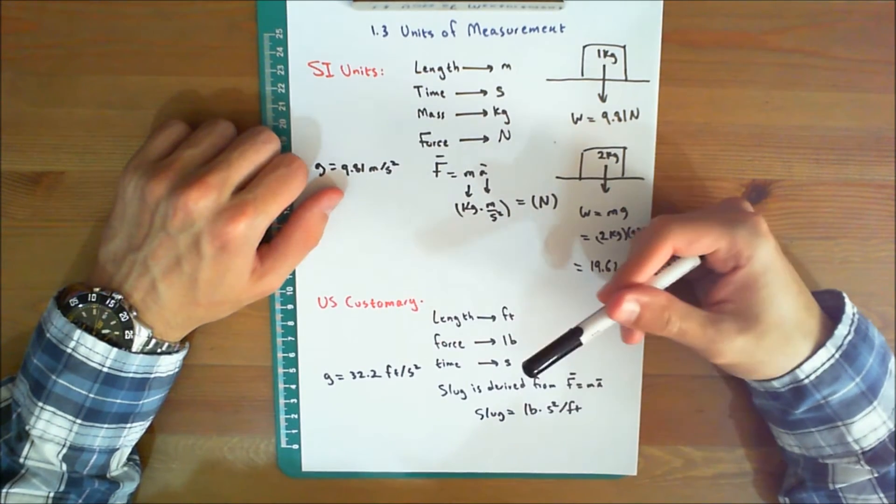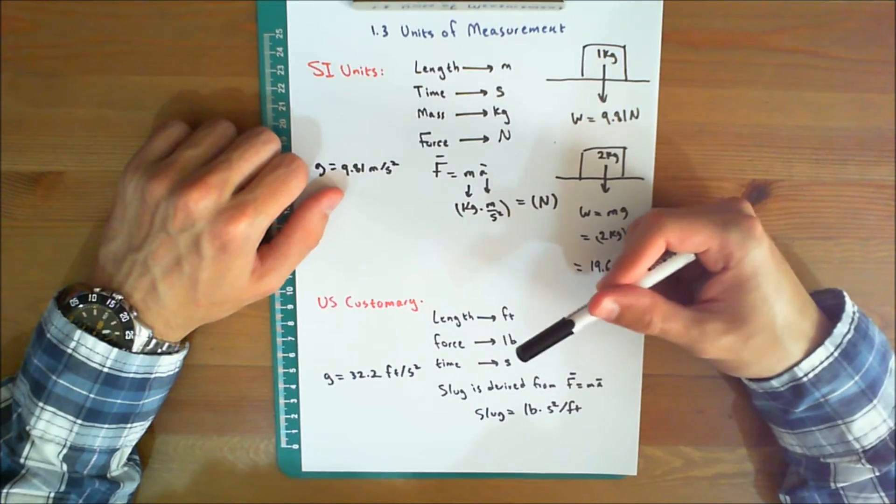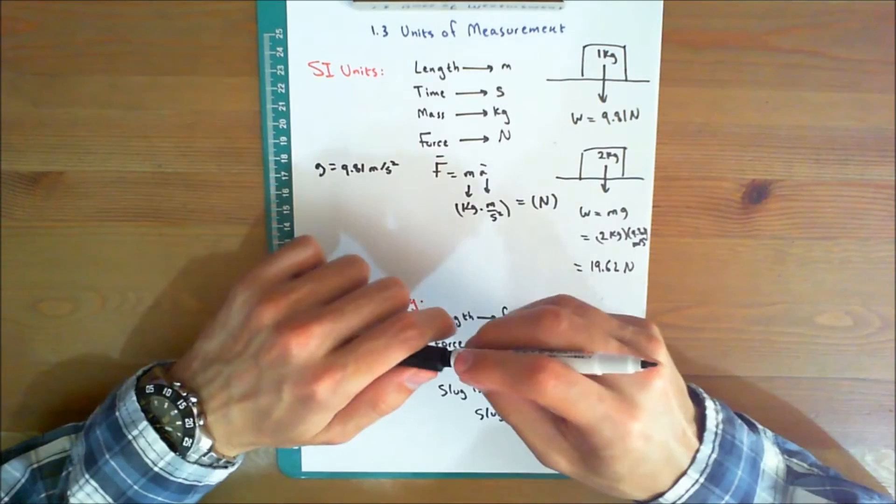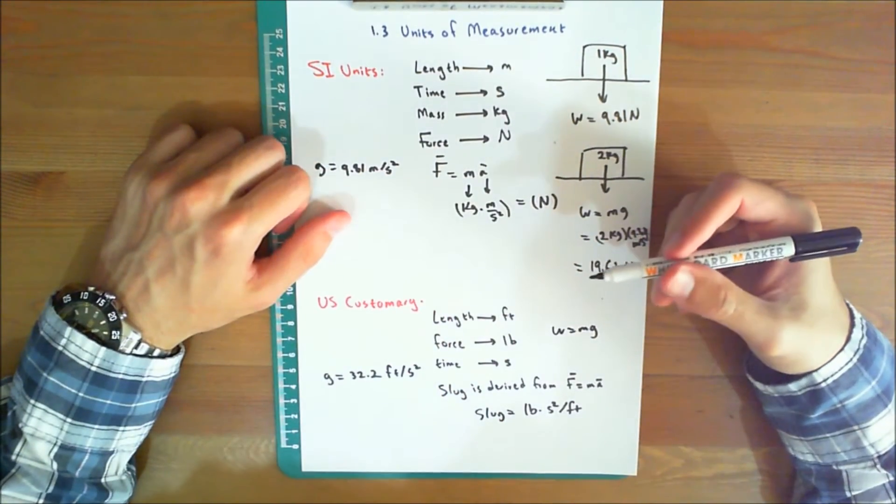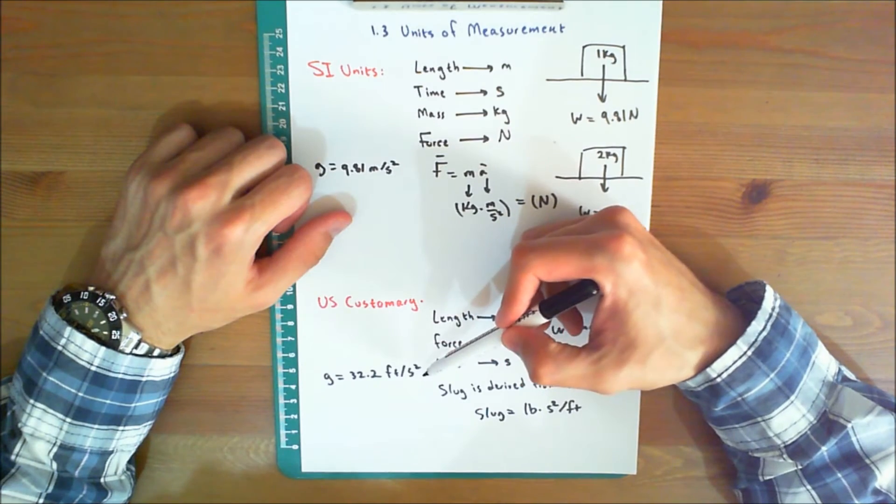In order to determine the mass of a body having a weight measured in pounds, we must apply the previous equation, W equals mg. If the measurements are made at the standard location, then g equals 32.2 feet per second squared.